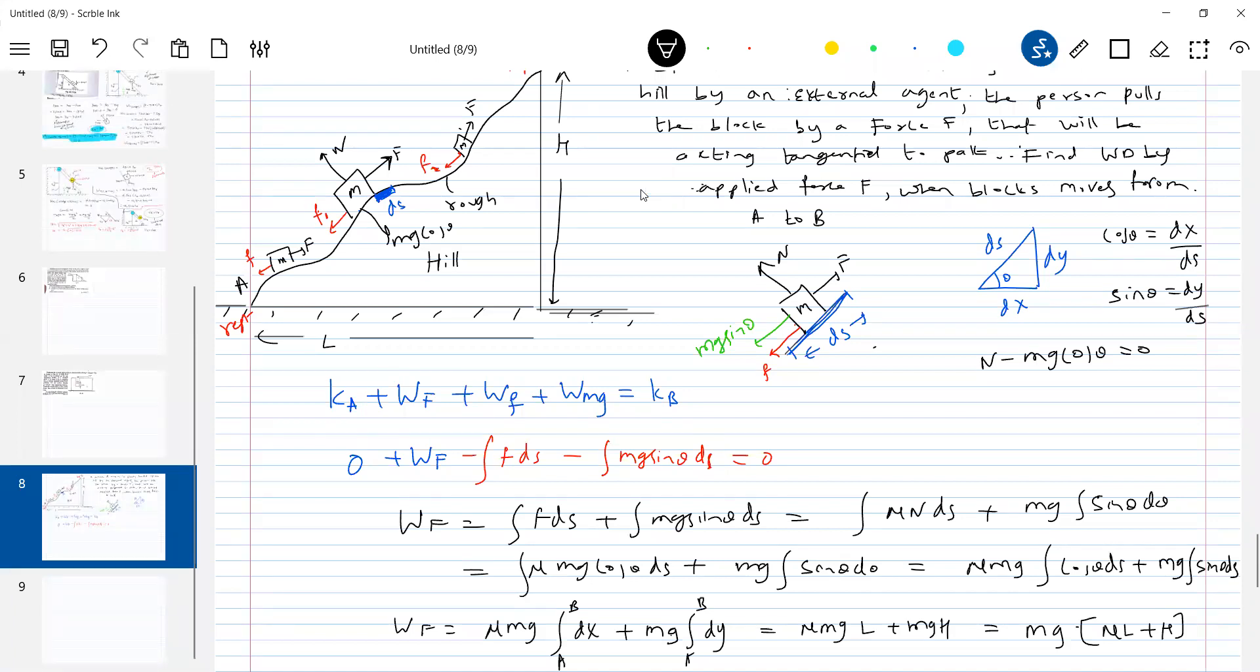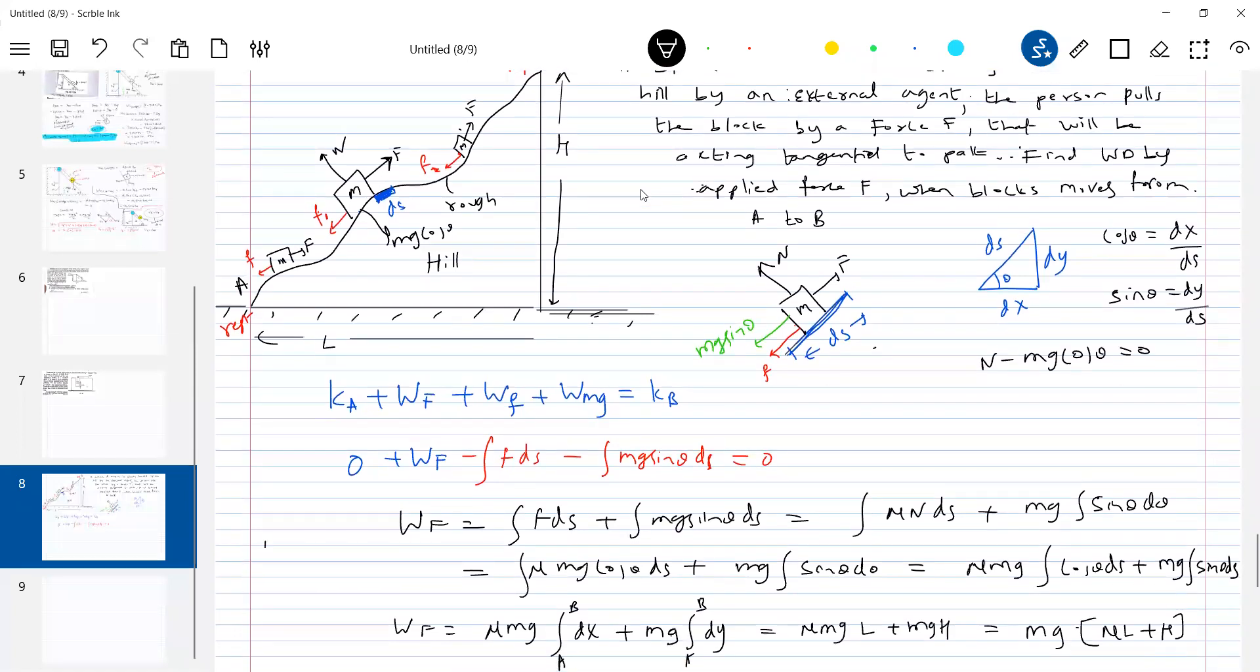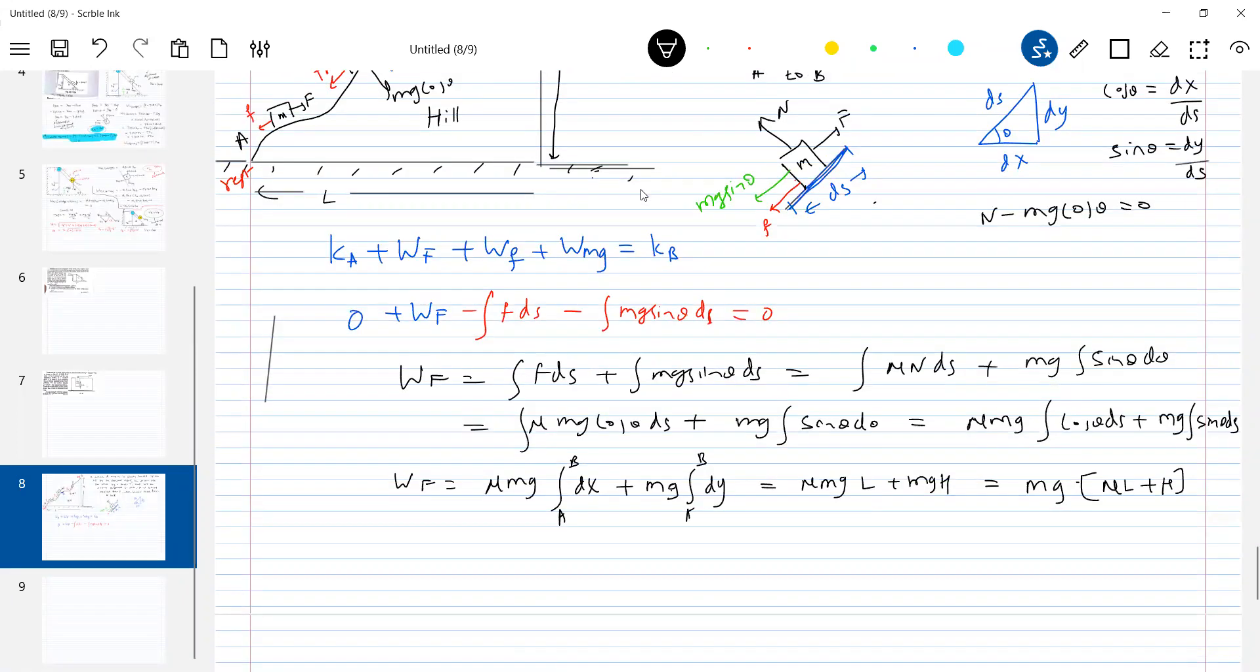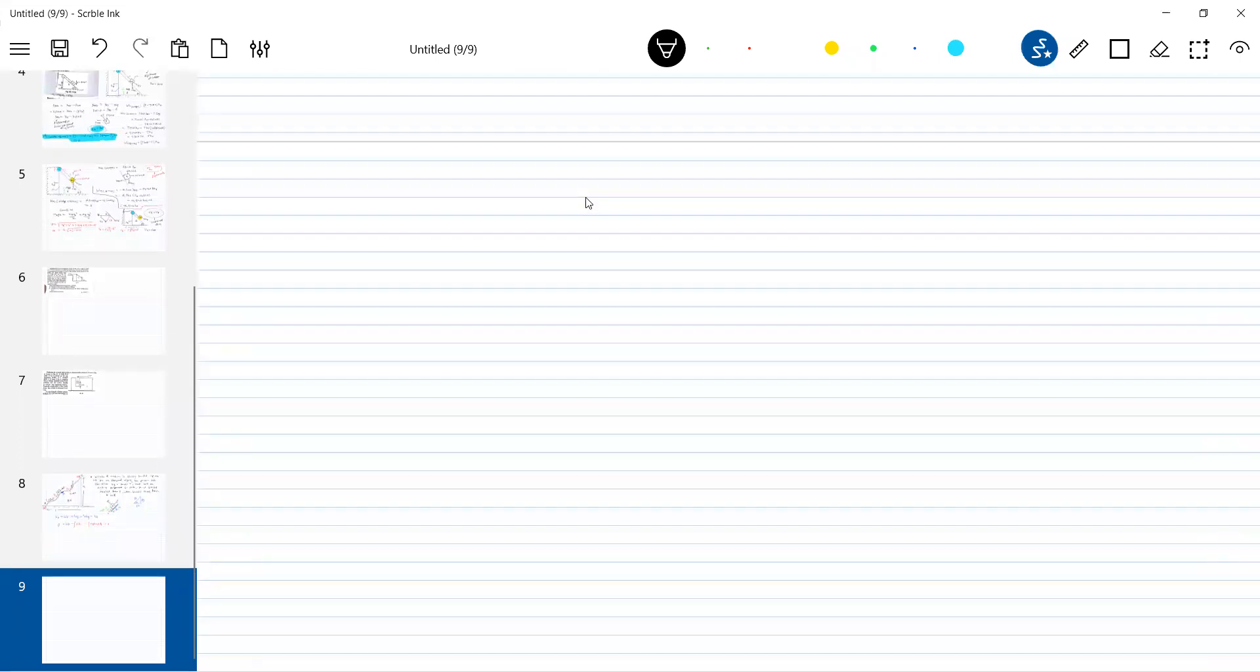I'll scroll down. Okay fine. We'll take the next case if a time varying force acts. Let me give you a situation of if a time varying force acts on your body, a force F acting on your object is 2t square plus 3t and the position of particle is given by...